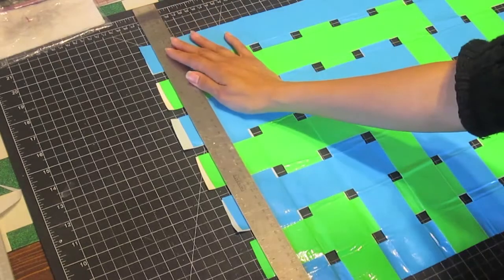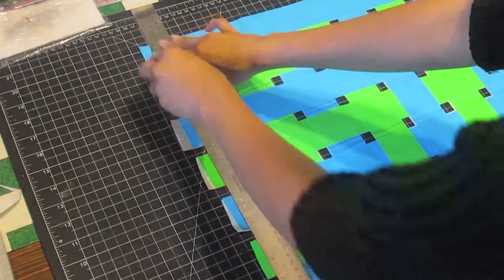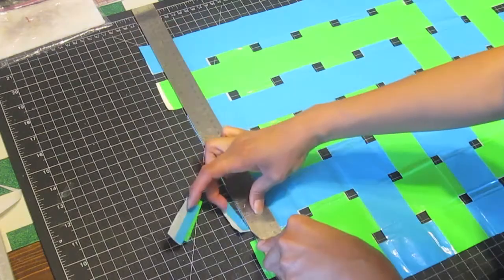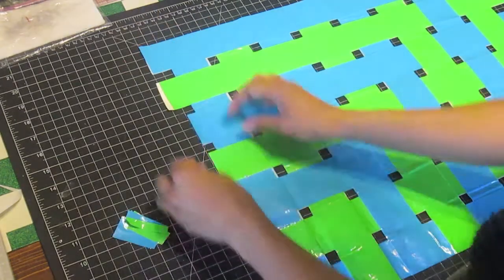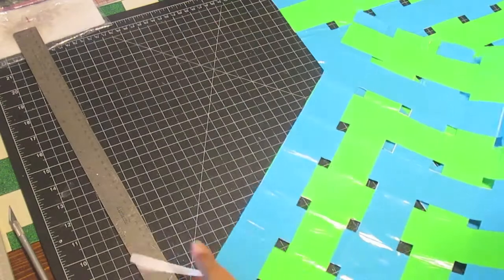Trim the outer edges using a metal ruler and a craft knife. It should be a half inch from the outer edge of the last vertical strip. The top and bottom of the fabric should be trimmed flush to the edges.